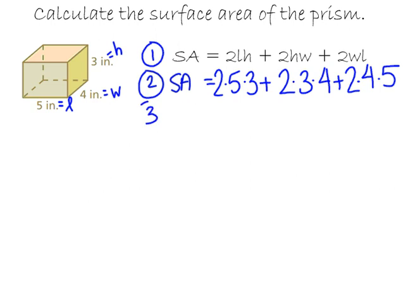Now on step three, this is where I'll start doing the computations. It might take a few extra lines since our formulas are getting more complex, and that's okay. We have 2(5)(3), which is 2(15), which is 30. Two times three is six, times four is 24. And 2(4)(5) is 2(20), which is 40.